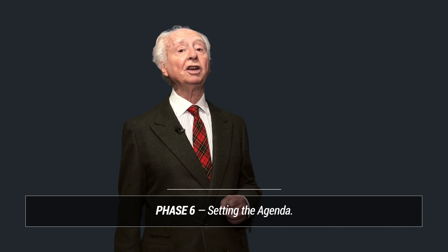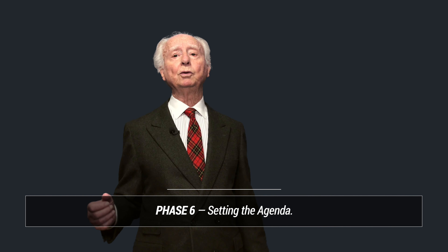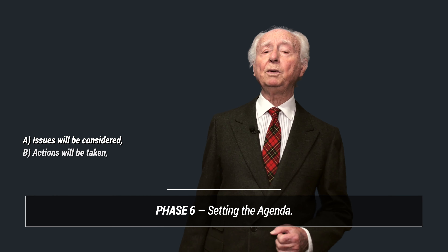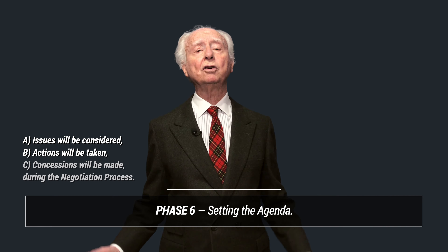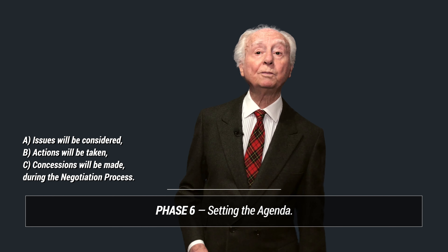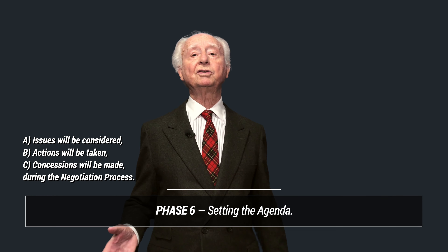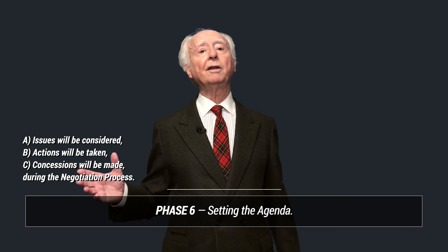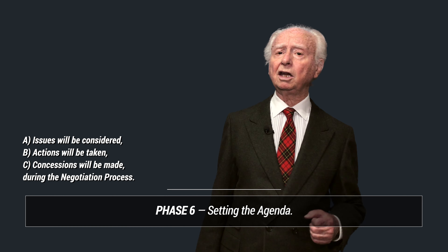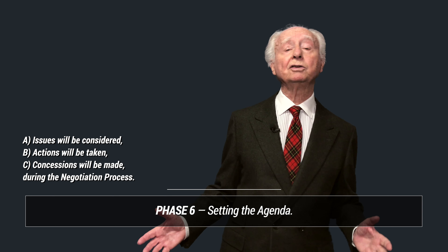Phase 6: Setting the agenda. The term agenda refers to the order in which: (a) issues will be considered, (b) actions will be taken, and (c) concessions will be made during the negotiation process. A decision should first be made on whether it is appropriate to establish a joint agenda with the other party, or to maintain one's own agenda. If necessary, the agenda itself may be subject to negotiation. Types include: individual agenda for one party, individual hidden agenda for one party, or an agenda to be established by both parties.